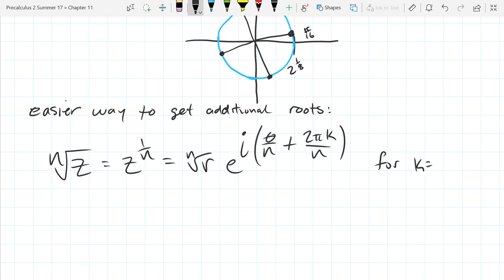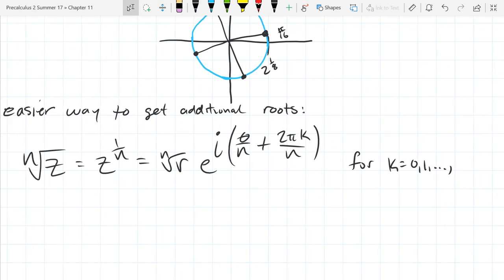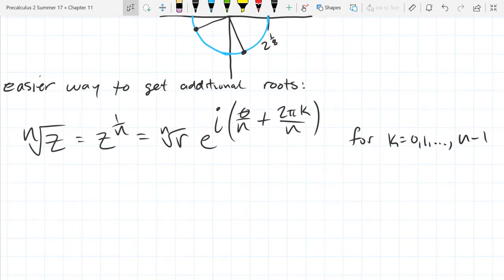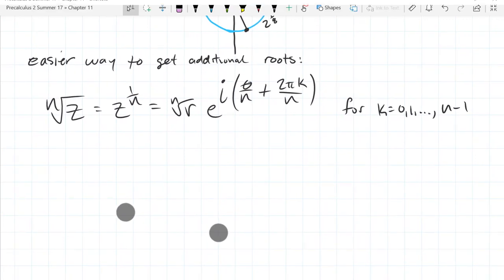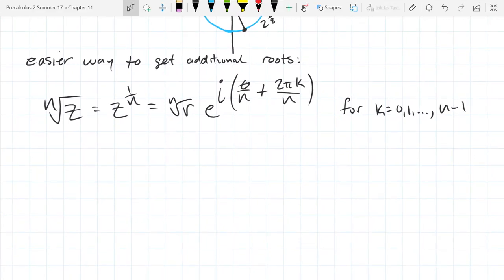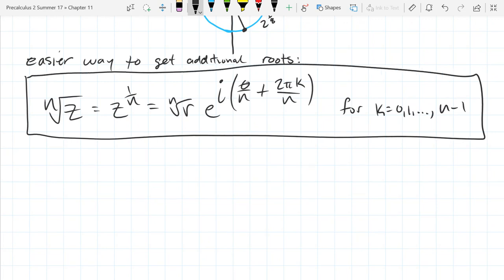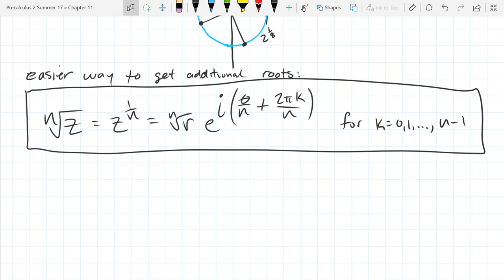For k equals 0, 1, all the way up to n minus 1. So there's going to be n different k values total. And that'll give you all of your additional roots. So before we had when we use k, we use for all integers. Now we want to be very specific and just go integers from 0 up to n minus 1.